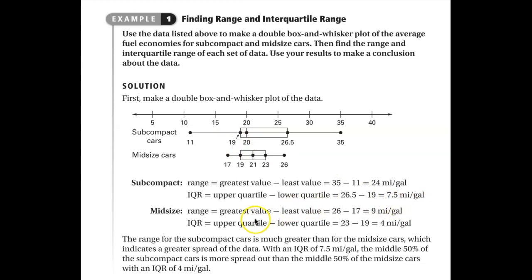For the midsize, my range is going to be 26 minus 17, or 9. And the interquartile range is going to be 23 minus 19, or 4. So you can see that the dispersion of the subcompact cars is much greater than it is for the midsize cars.